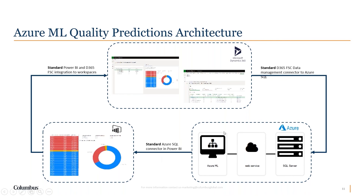From there, we have a set of Power BI reports and dashboards that are looking at that predicted data — looking at that future new data with associated predictions. Those Power BI visualizations, including reports and dashboards, can be embedded back into D365. It looks like an automatic control loop.